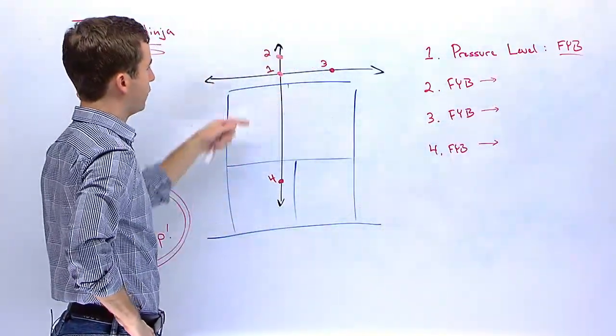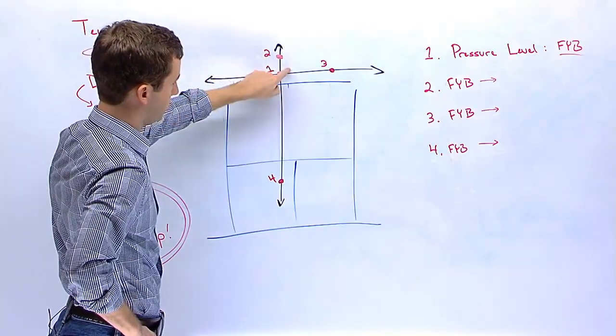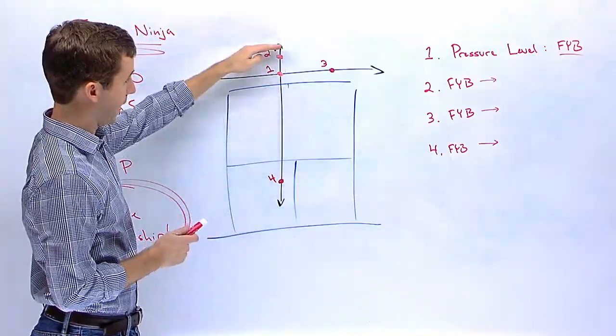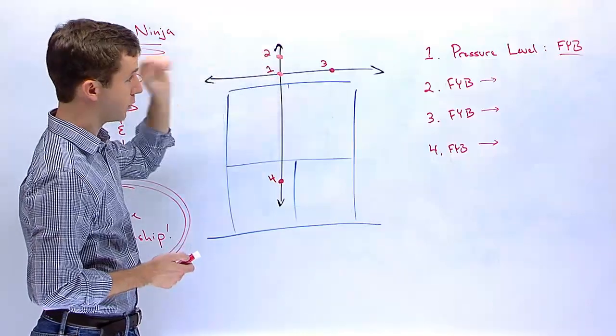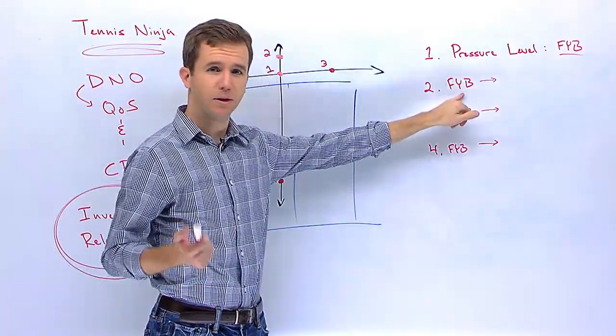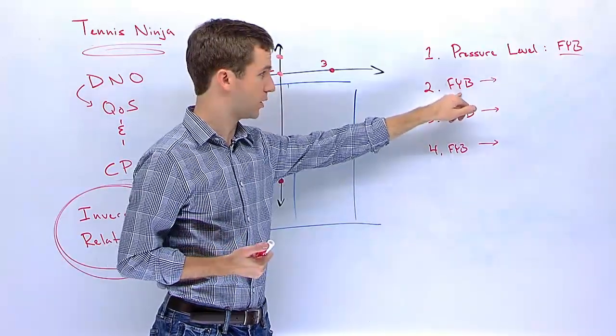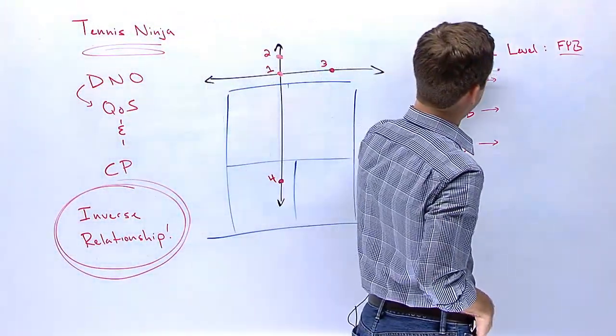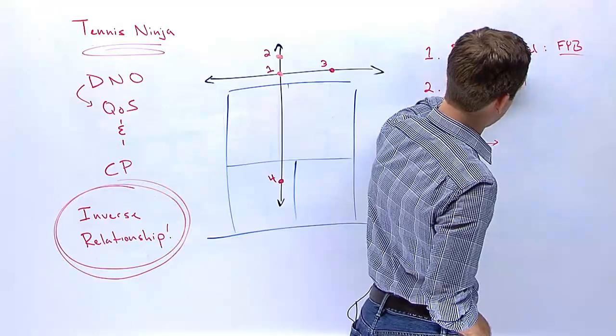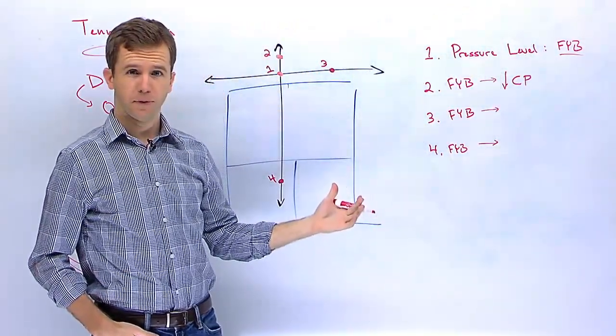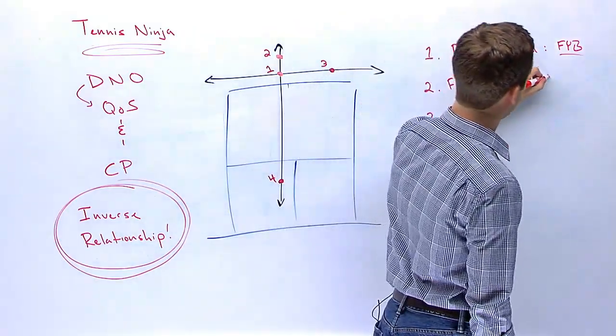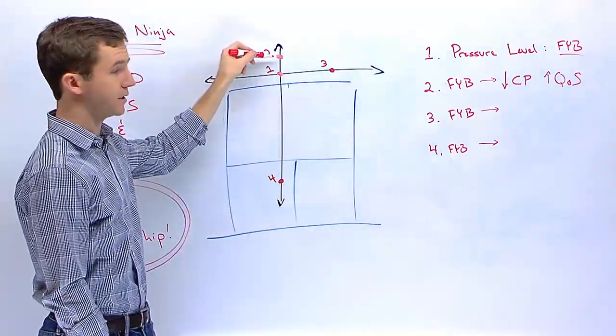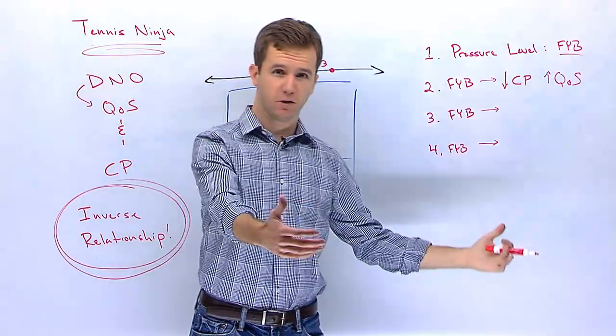So the question becomes, if we make contact at point two here, which is a few feet behind contact point one, still in the middle of the court, but further back, what do we have to do to apply the same amount of pressure to our opponent, pressure level FYB? Well, what we've seen here is because you've moved back, your court positioning has come down. So to counterbalance that, the quality of your shot making needs to go up. In other words, you simply have to hit a better shot when you're further back to apply the same amount of pressure.